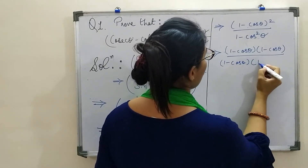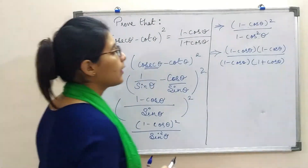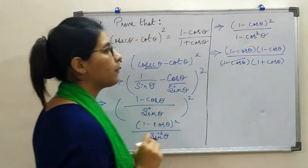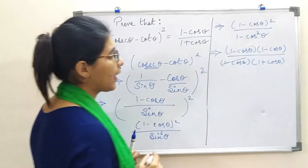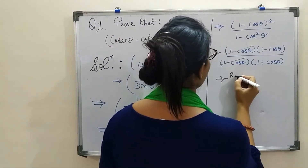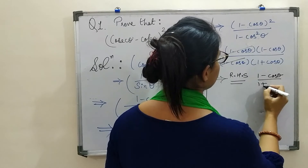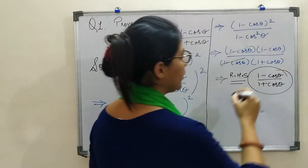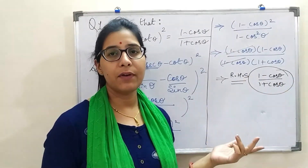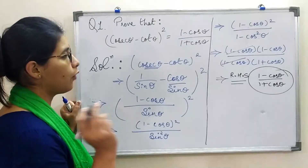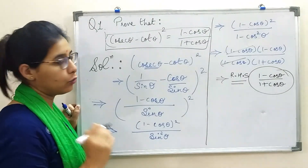Now comparing numerator and denominator: 1 minus cos theta appears in both the numerator and denominator, so we cancel them out. The most simplified form of the RHS we get is 1 minus cos theta upon 1 plus cos theta. We cannot simplify further since we have plain 1 and cos theta. Now it is time to observe our TPT — our 'to prove that' — which said LHS must equal RHS.